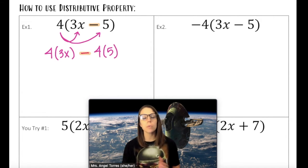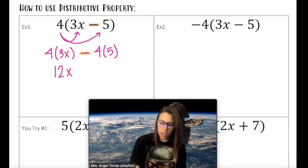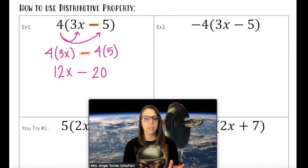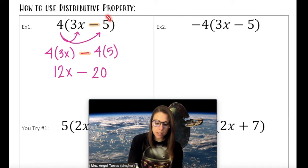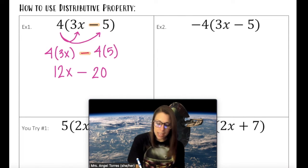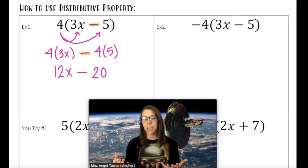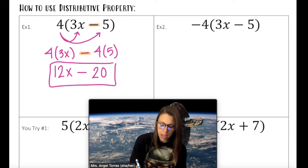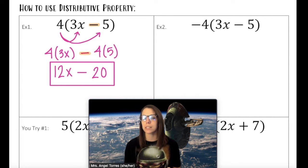From here, we're just going to simplify. 4 times 3x is 12x, and 4 times 5 is 20, and this stayed a difference, so we keep it as a difference. Now our constant, which used to be stuck inside the group, has broken free outside of the group. If this were an equation, we could now use things like APE. Since we're only dealing with expressions, we are done — the constant is free.